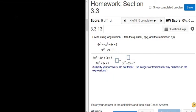Divide using long division. The first thing you want to do is write the bottom piece on the outside: 6x² + 2x + 7. Then on the inside goes the top piece: 6x³ - 4x² + 9x + 5.